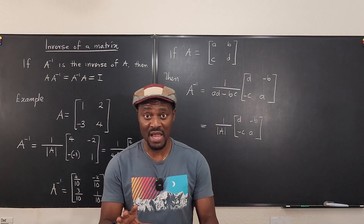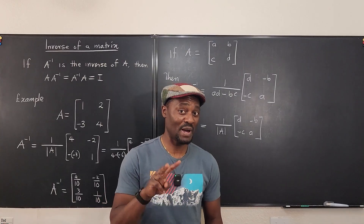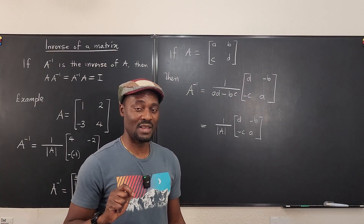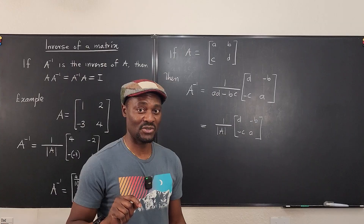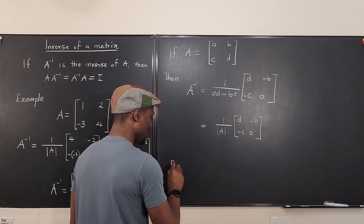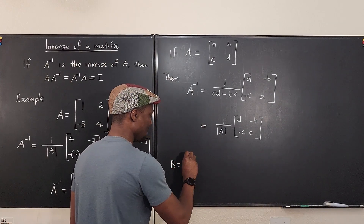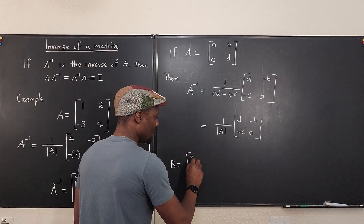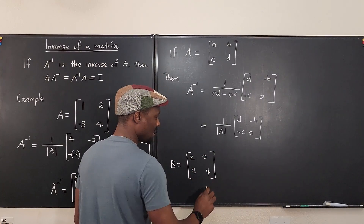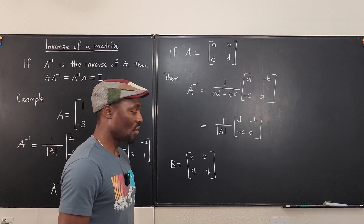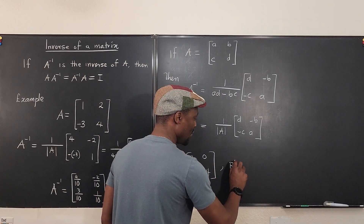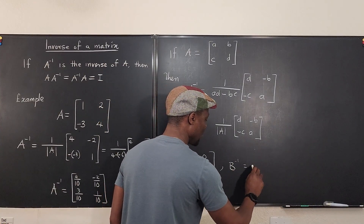If you ever see a 2x2 matrix, you can quickly compute its inverse. For example, let's say matrix B equals [2, 0; 4, 4].